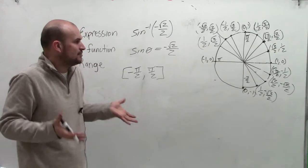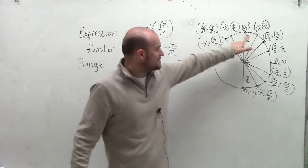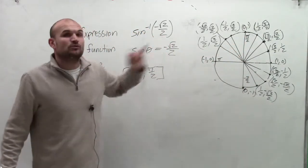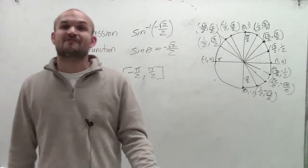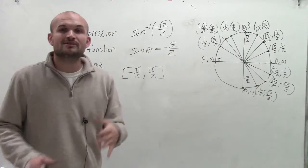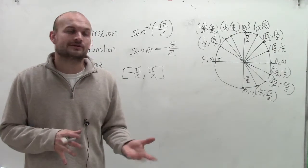So what angles fall between negative pi halves and pi halves that when we take the sine of them equals negative square root of 2 divided by 2? Now remember, when we were talking about finding the value of sine of an angle, we always looked at the y-coordinate of the coordinate point on the unit circle.